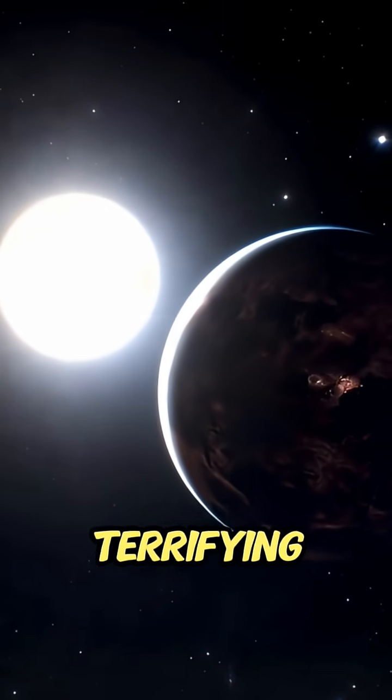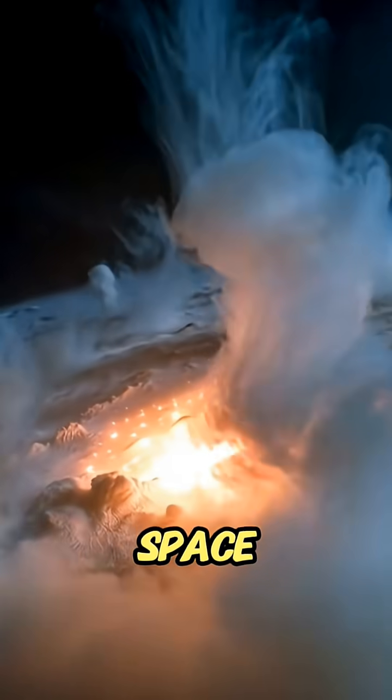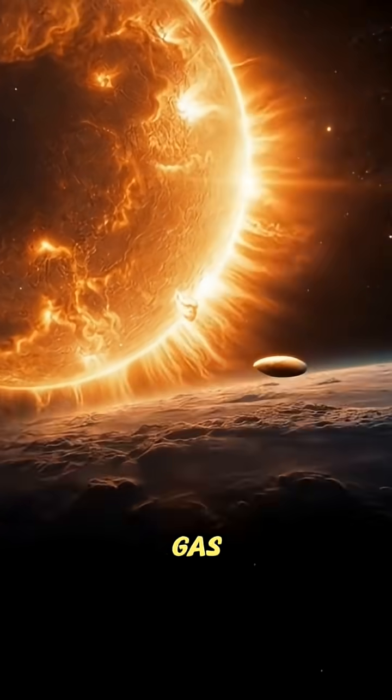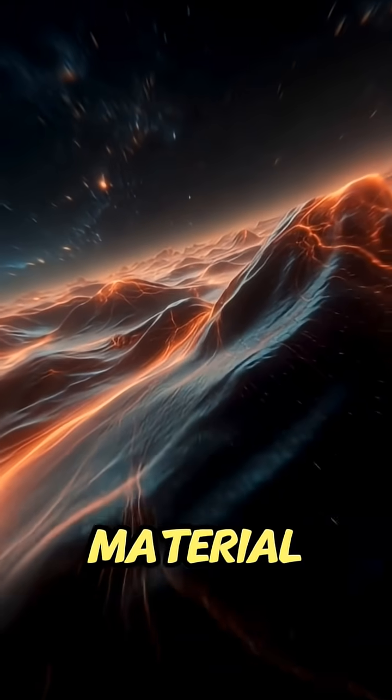But the most terrifying part is that the star is slowly devouring it. Its atmosphere literally flows into space, forming a giant tail of glowing gas. Every second, WASP-12b loses thousands of tons of material.